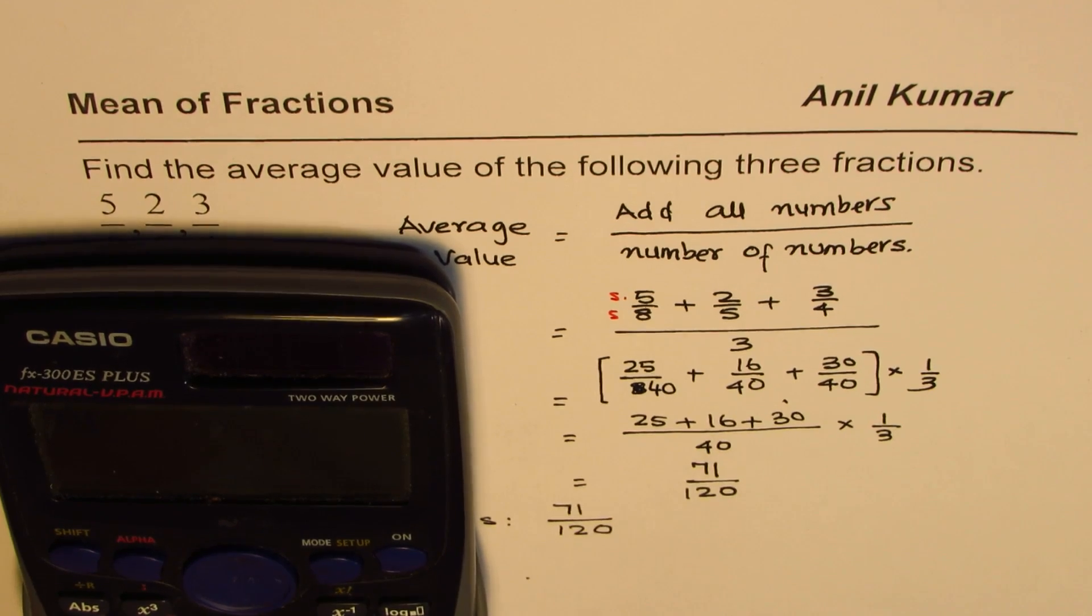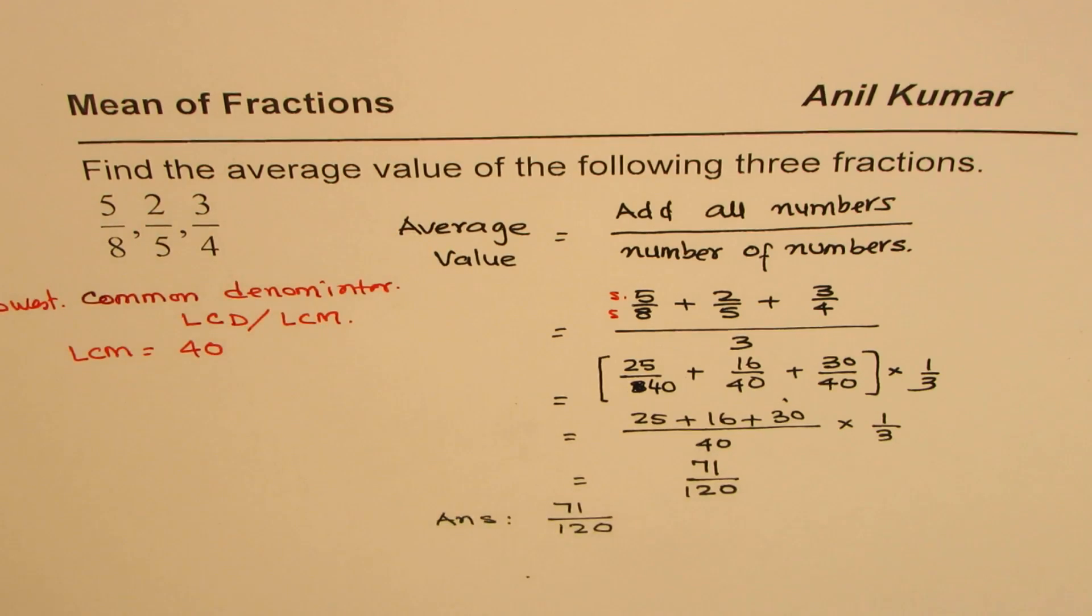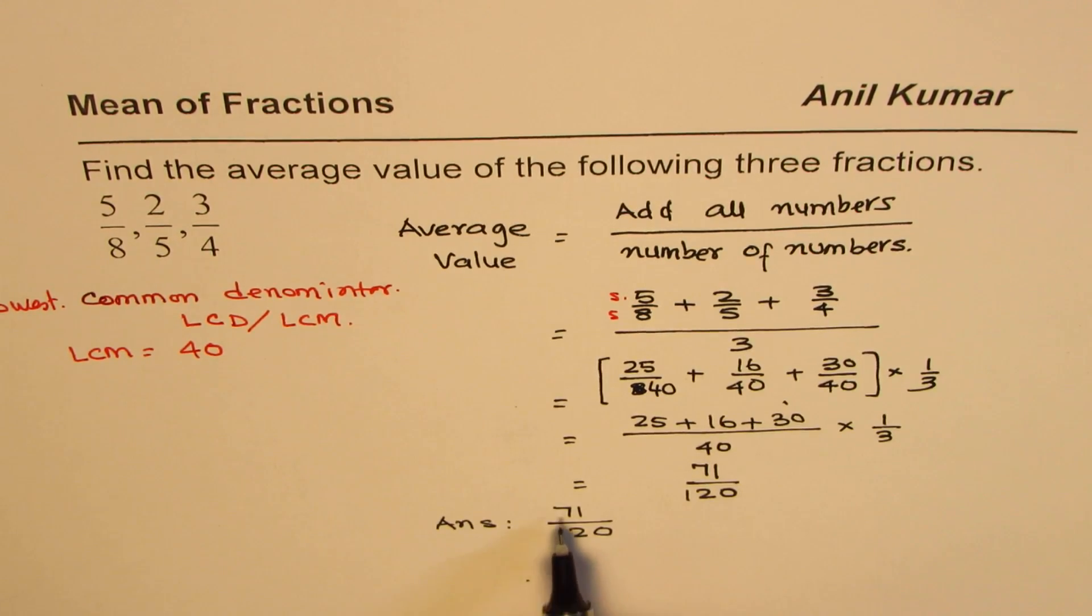It is better to write in fractions. If you are required to write in decimals you could always use your calculator and then find approximate value, which could be 0.6 rounded.